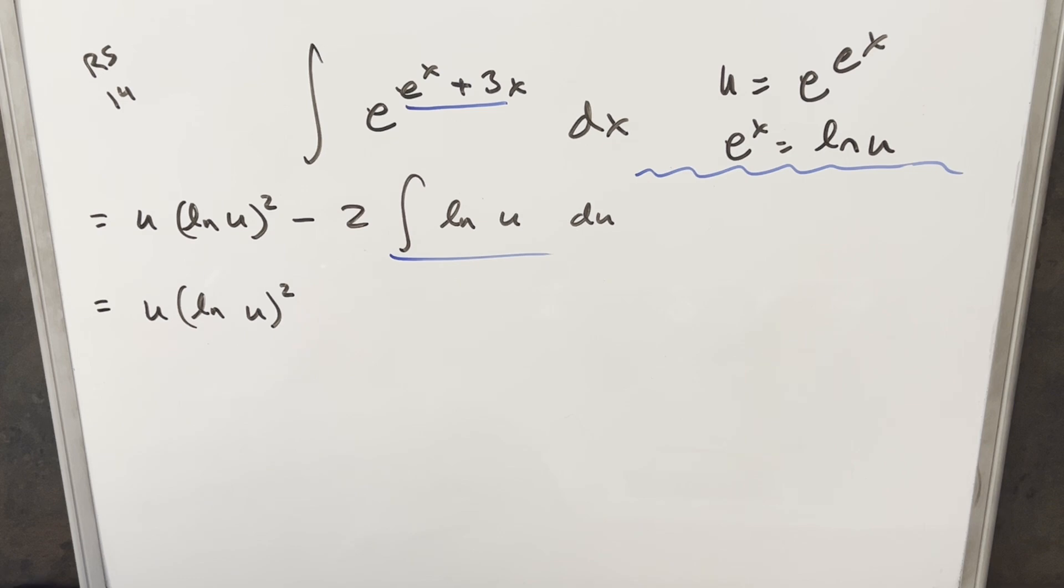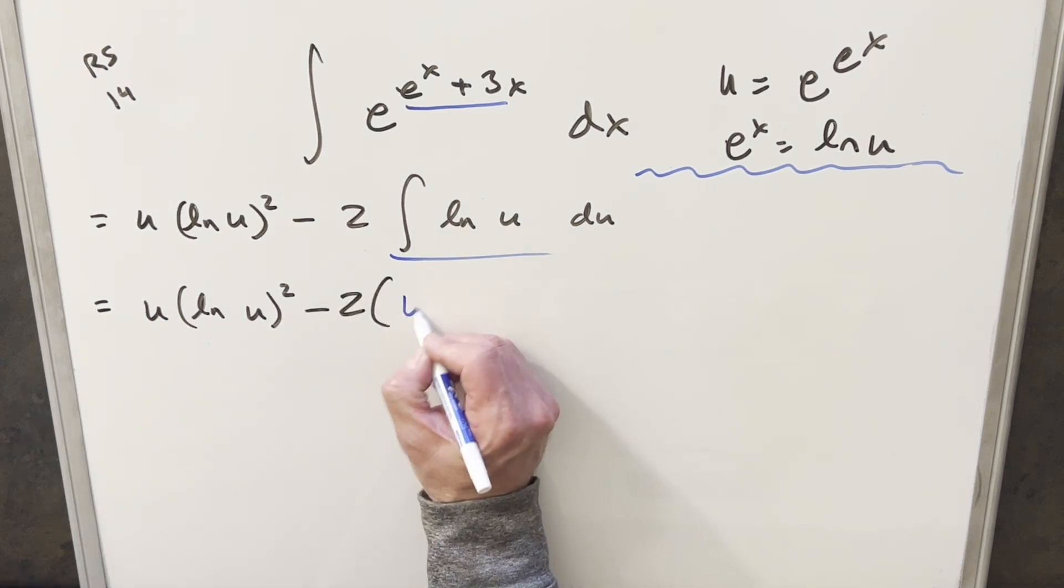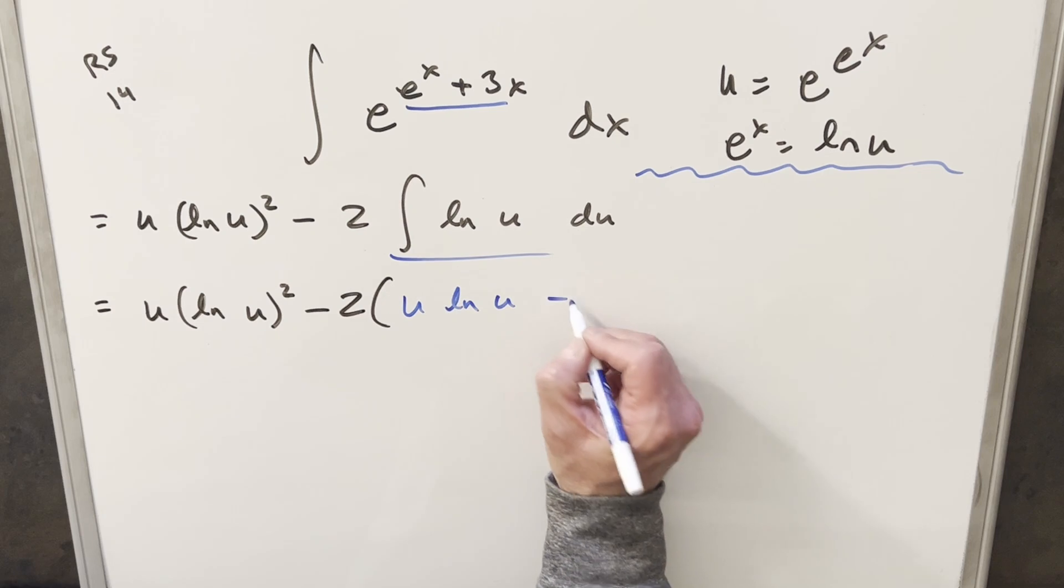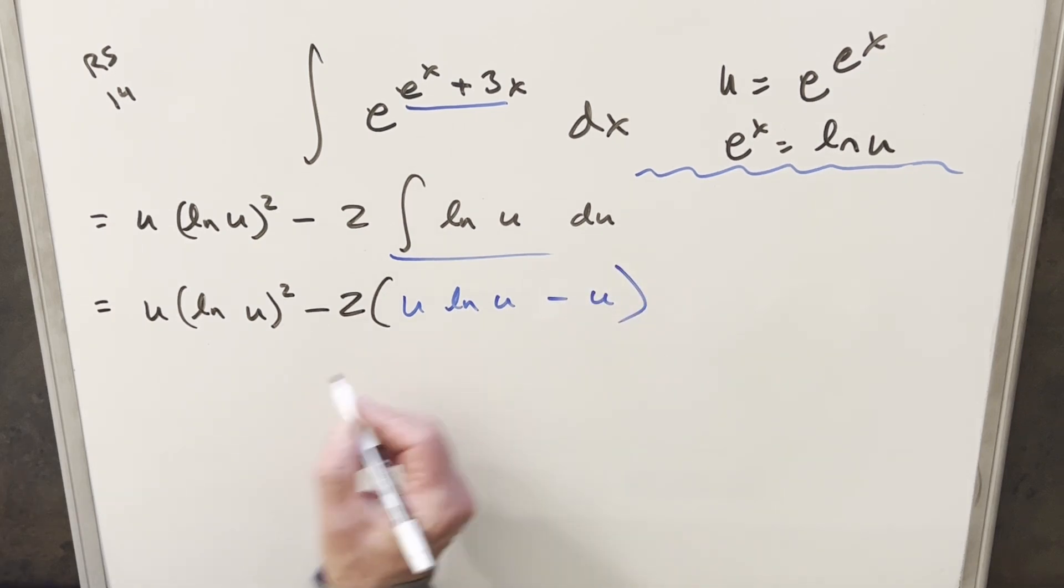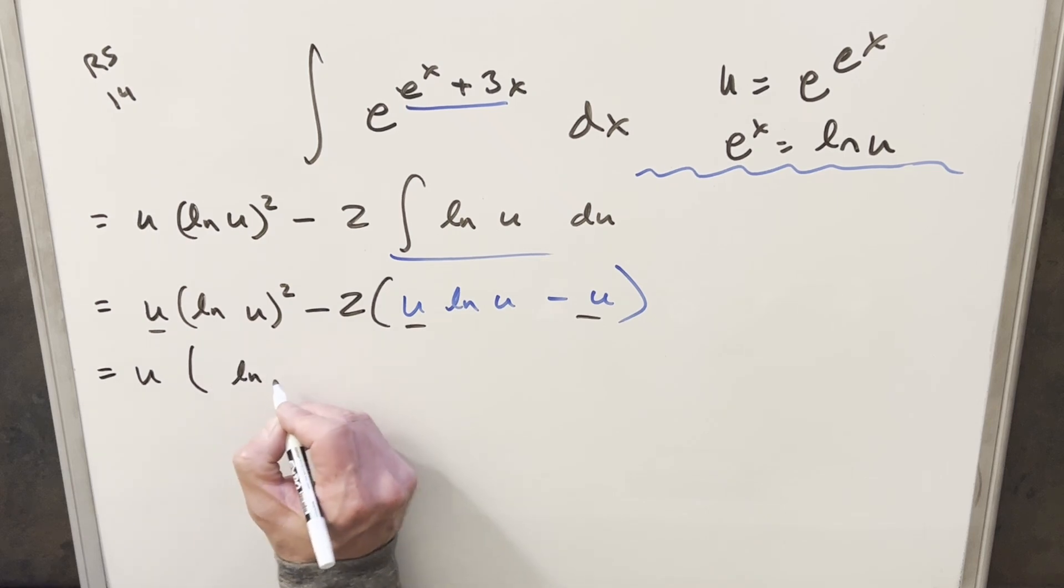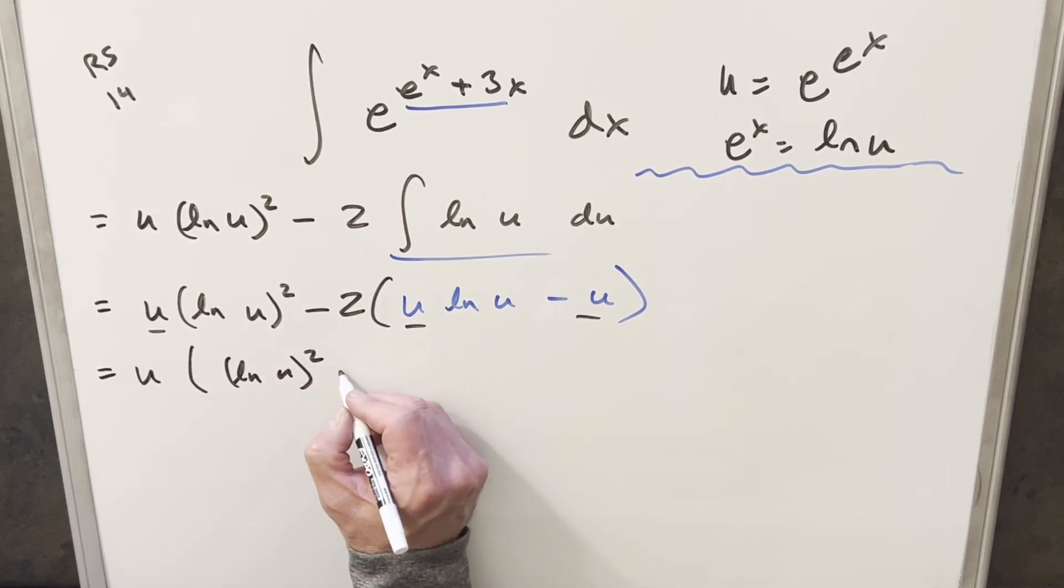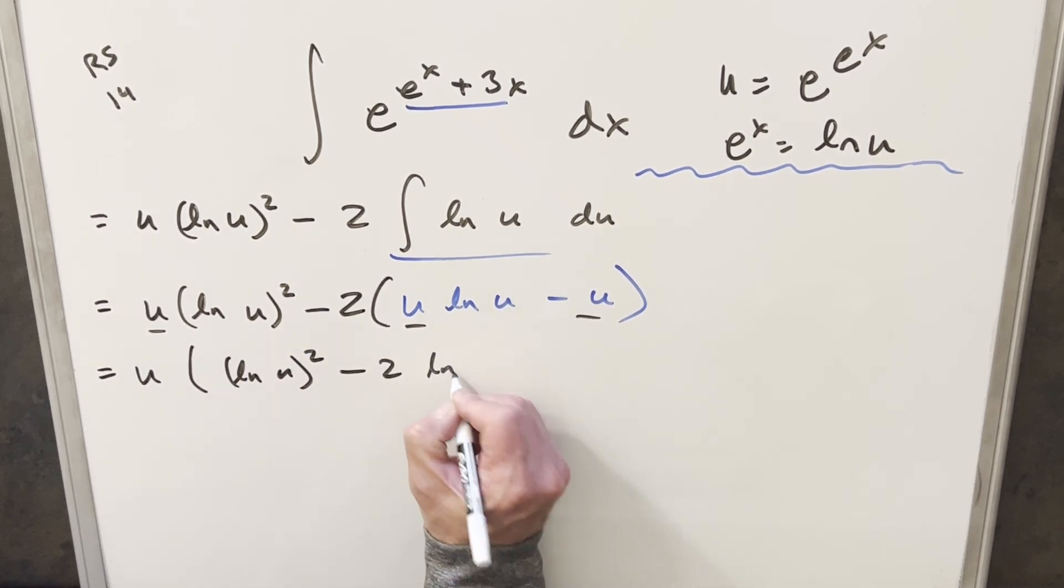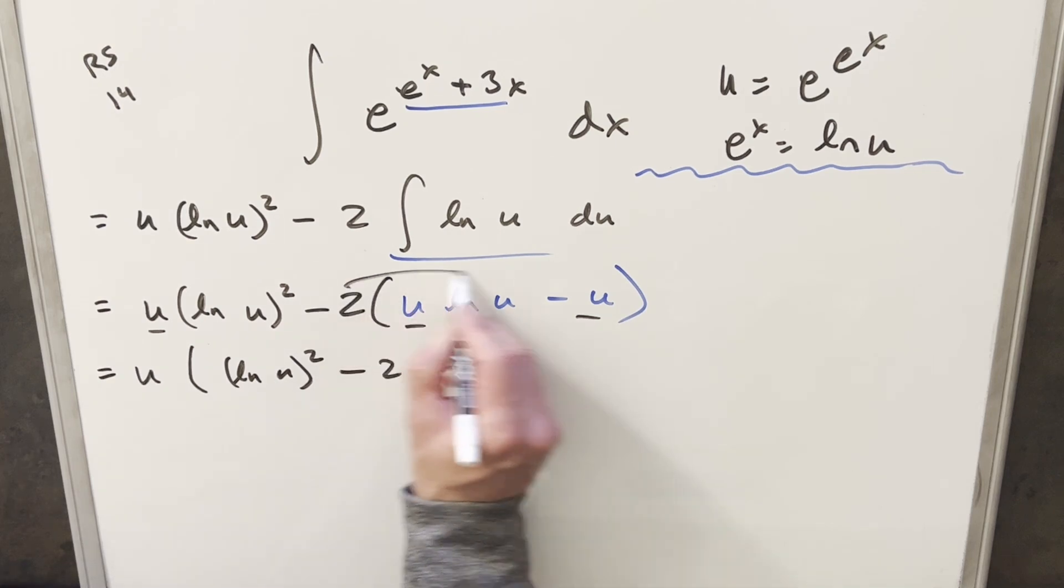Okay, now from here, just integrating natural log of u. What I'm going to do is use a formula on that. This is going to become u ln u minus u. And then from here, let's just factor. We have a u in common everywhere. So let's factor u up front. This is going to become ln u squared minus 2 ln u. Distributing in minus here, that's just going to give me a plus 2.